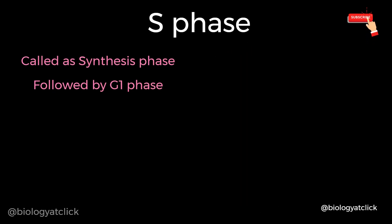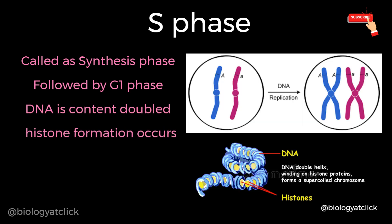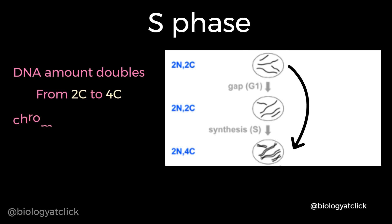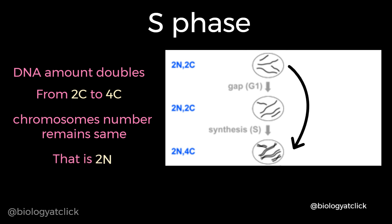Cells that need to divide further enter the S or synthesis phase after G1 phase. During this phase, important events like DNA replication and formation of histone proteins take place. During this time, the amount of DNA per cell doubles. If the initial amount of DNA is denoted as 2C, then it increases to 4C. However, there is no increase in chromosome number — the cell will have 23 pairs or 46 chromosomes even after S phase.